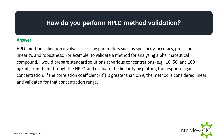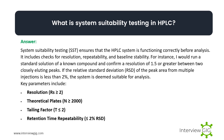How do you perform HPLC method validation? HPLC method validation involves assessing parameters such as specificity, accuracy, precision, linearity, and robustness. For example, to validate a method for analyzing a pharmaceutical compound, I prepare standard solutions at various concentrations, run them on the HPLC, and evaluate linearity by plotting the response against concentration. If the correlation coefficient is greater than 0.99, the method is considered linear and validated for that concentration range.